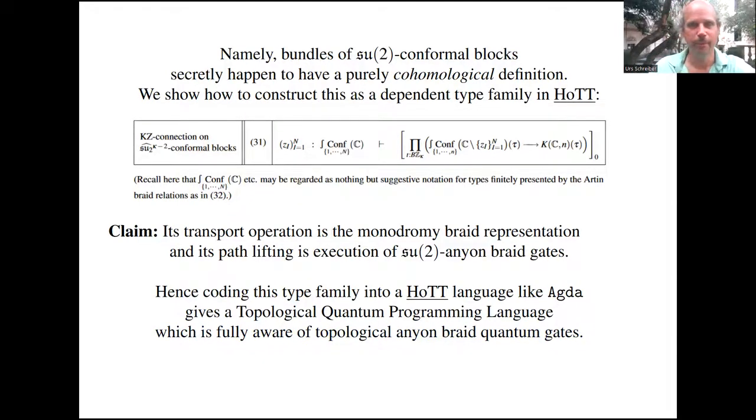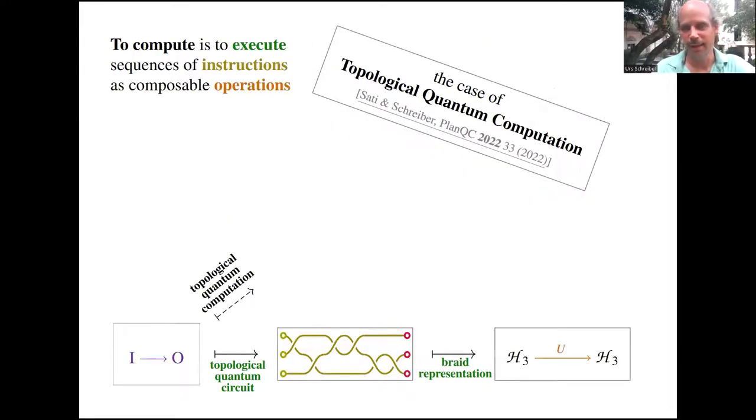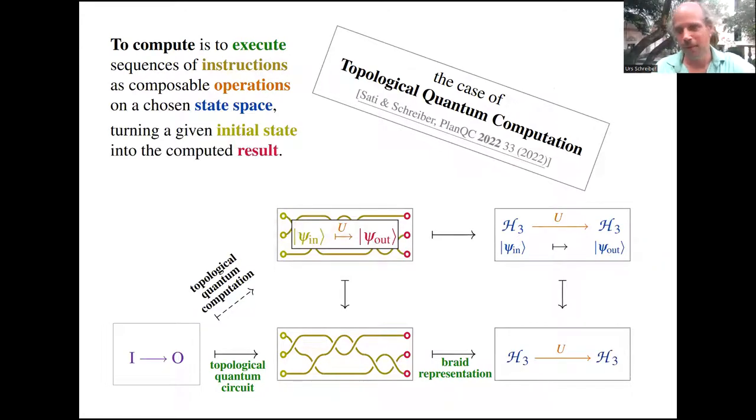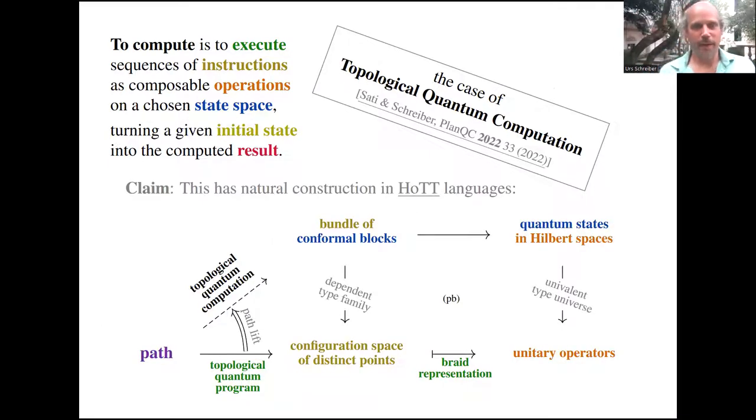That's the first punchline I have to offer. Maybe just first, a little summary of what we just said. In this picture, topological quantum circuit evaluation means taking a path in the delooped braid group, which is a braid, lifted up through this type family of conformal blocks, where it becomes an actual unitary operation. The point is that this type family of conformal blocks can actually be constructed in the homotopy type theoretic language.